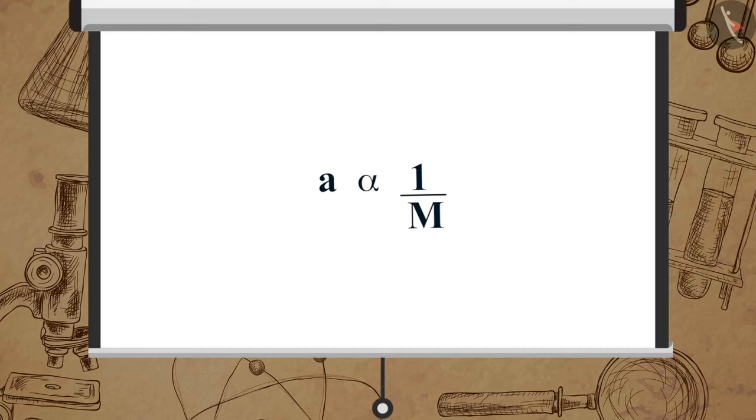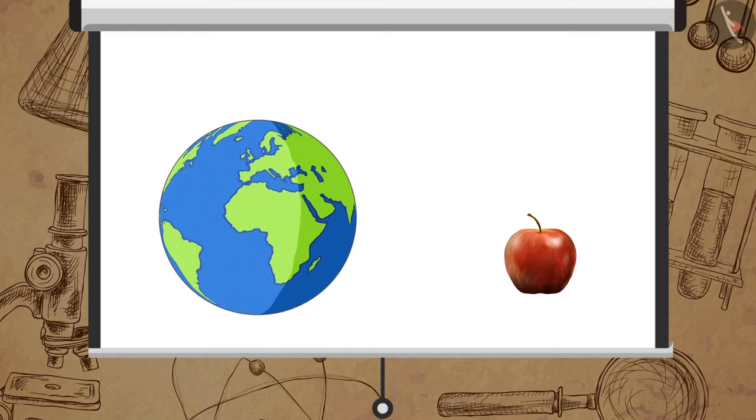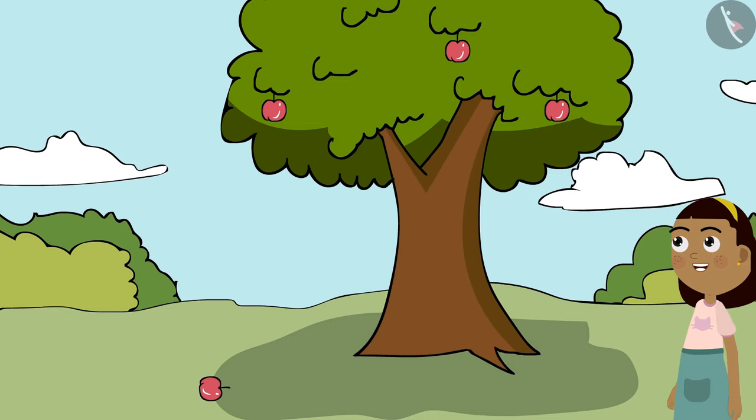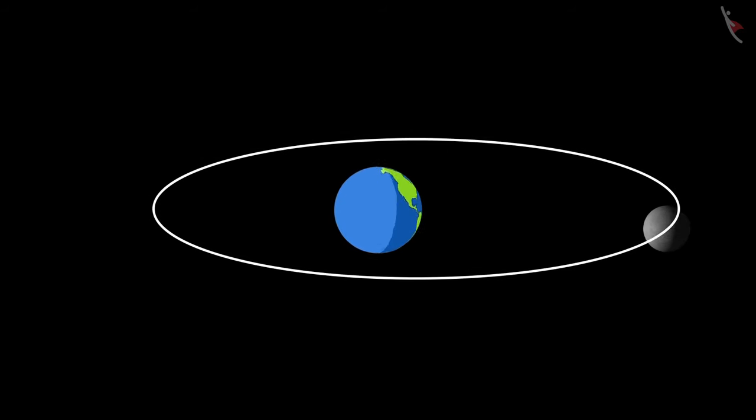It is because according to the second law of motion, acceleration is inversely proportional to the mass of an object. The mass of an apple is negligible compared to the mass of the earth. Because of this, although they both attract each other with the same amount of force, the acceleration of the earth is much less compared to the acceleration of the apple.